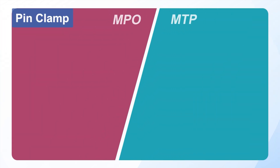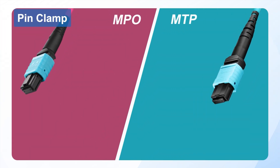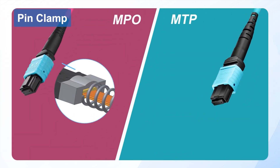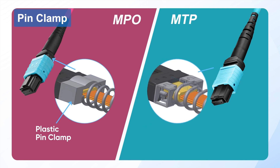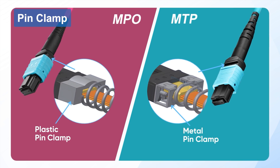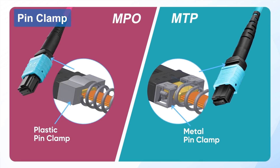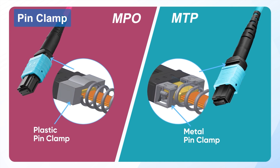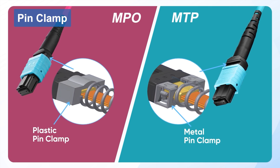Additionally, the pin clamp is also different. MPO connectors typically use plastic pin clamps that break easily during frequent mating cycles. In contrast, MTP connectors employ durable metal pin clamps, reducing breakage risk. They also feature elliptical springs that maximize clearance between the fiber ribbon and spring, protecting the ribbon during insertion.